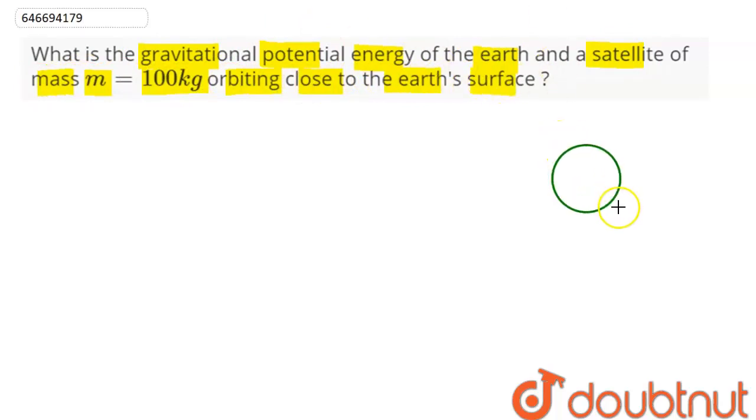Suppose this is our earth. We need to find gravitational potential energy of our satellite and the earth close to the earth's surface, which implies this height is negligible in comparison to the radius.